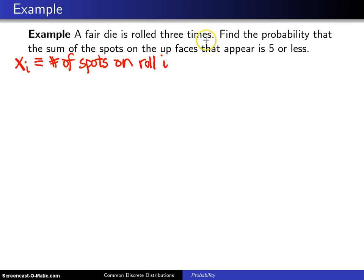The fair die is being rolled three times, so X sub i is the number of spots that appear on roll i, and that will go for i equals one, two, and three. So X1 is the number of spots on the first roll, X2 the number of spots on the second roll, X3 the number of spots on the third roll.